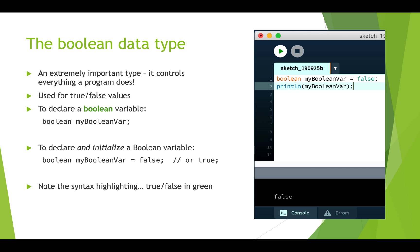The choice of those diamond-shaped boxes in flowcharts is typically controlled by a yes/no or true/false decision. In order to make those decisions we need the Boolean data type — it controls everything that happens in a program. A Boolean data type can only take two values: true or false. You declare it just like int or float variables — you have the type, which is boolean, then whatever variable name. This creates a box in memory to store a boolean variable, but doesn't put anything in it. You could also declare and initialize at the same time, like: boolean myBooleanVar = false, which creates the box and puts false into it.